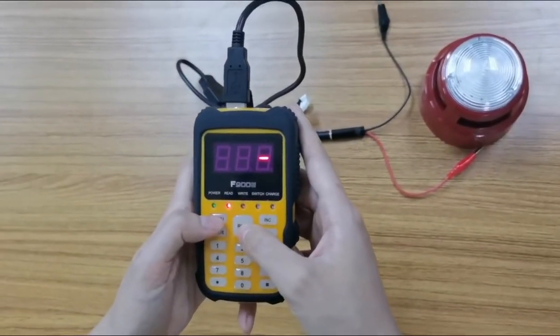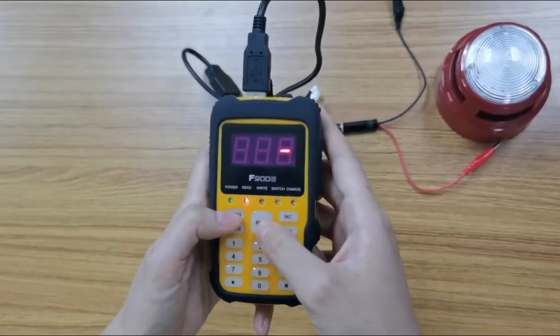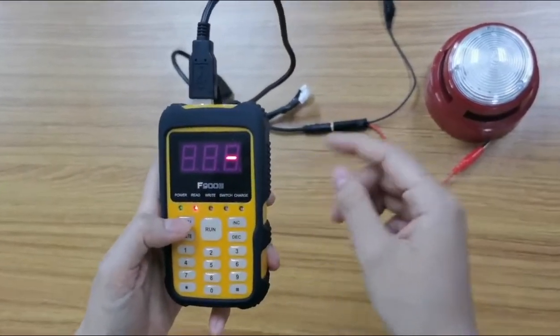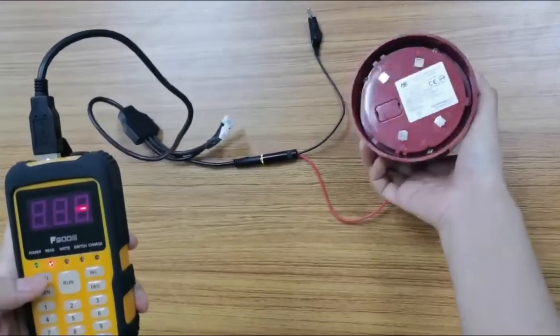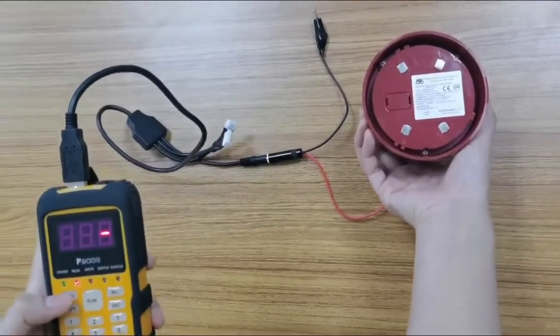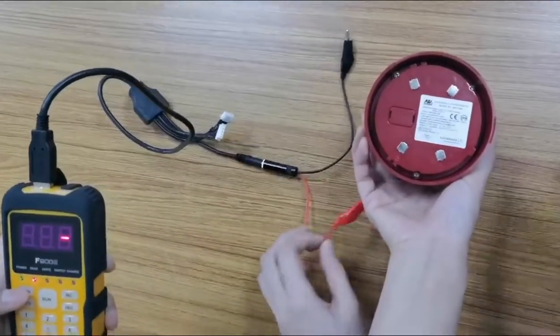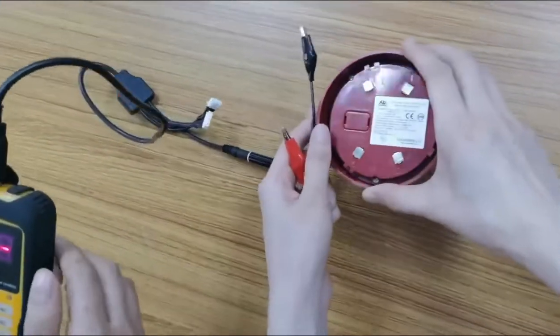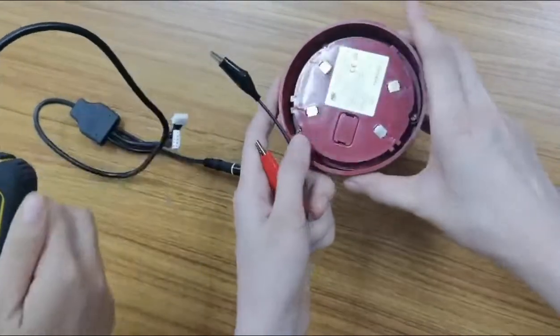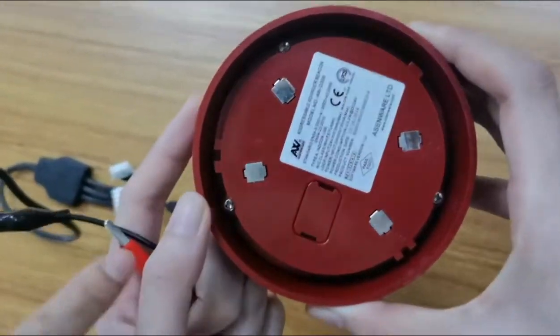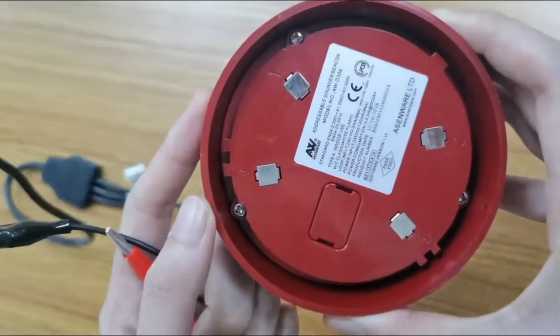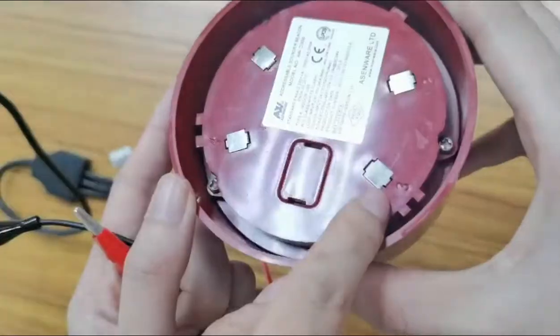Now program the address for the adjustable smoke beacon. Okay this is terminal one. This is terminal three.